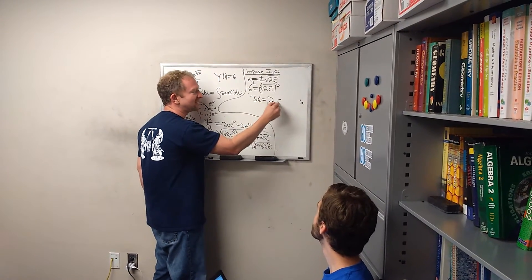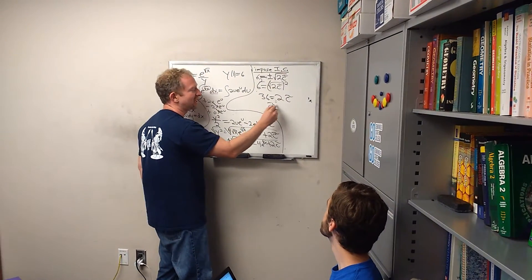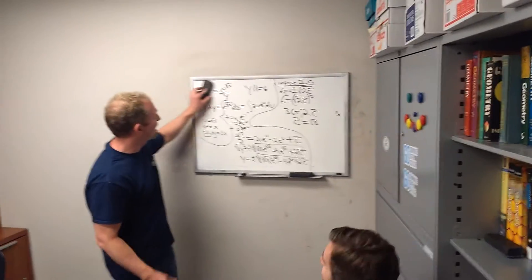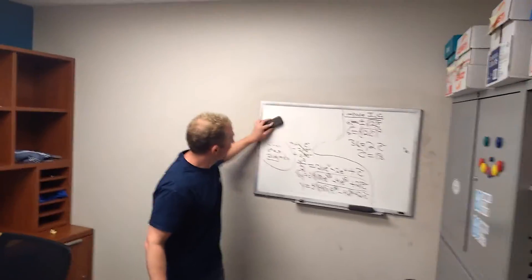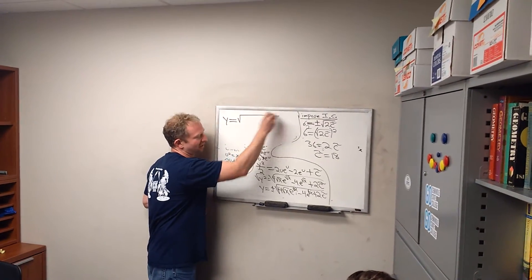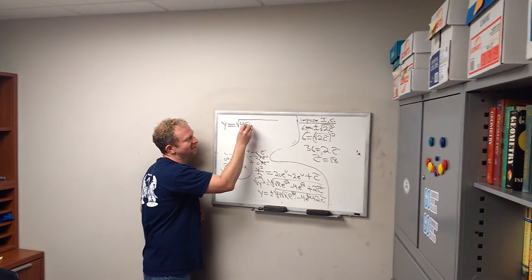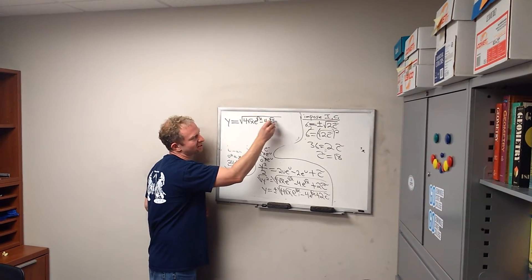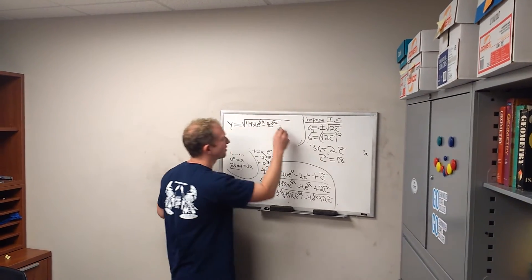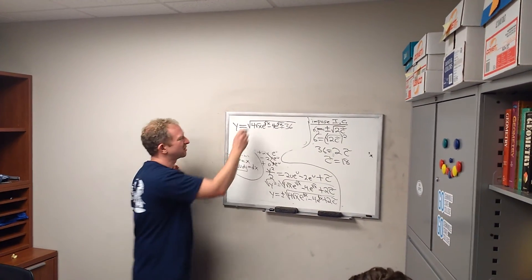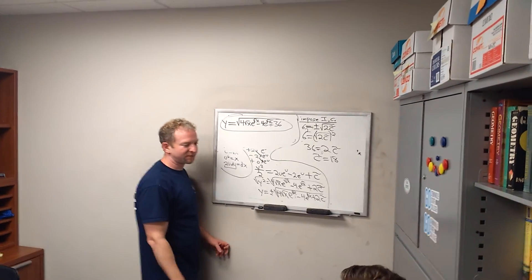So you get 36 equals 2C̃, so C̃ is 18. And so y equals — it's the plus — 4√x · e^√x minus 4e^√x, and then 2C̃ is 2 times 18, so 36. And that's your answer. That's the final answer.